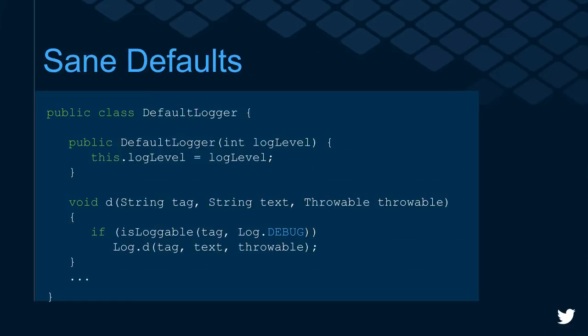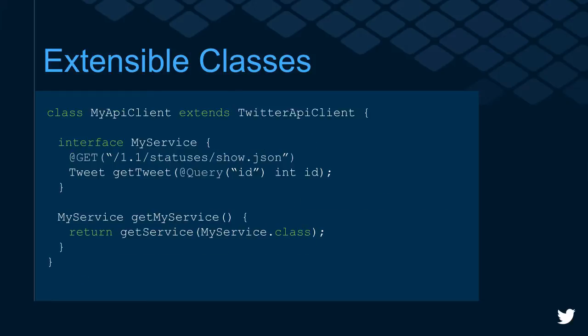If the developer chooses not to implement their own logging interface, we provide a safe default that uses the standard Android logger. The Twitter kit provides an API client with the most popular Twitter endpoints defined, and it uses the session to automatically do the signing for you. But there are a ton of Twitter endpoints we didn't include out of the box. If you need a less common endpoint, you can extend the TwitterApiClient and use your own Retrofit-style interfaces with annotations, and we'll handle it all for you.